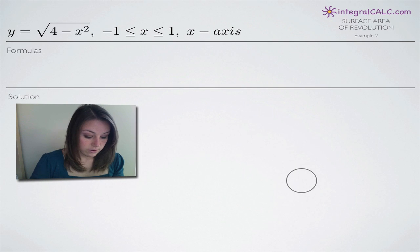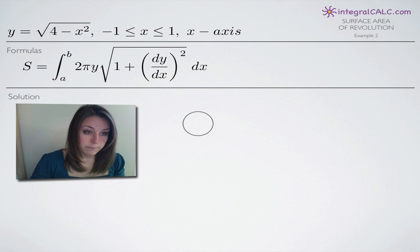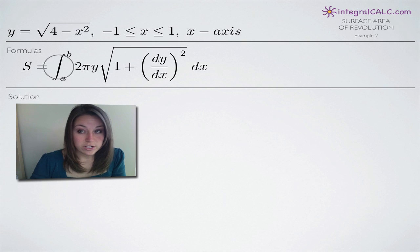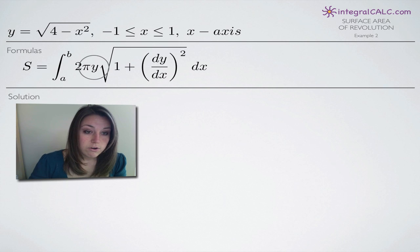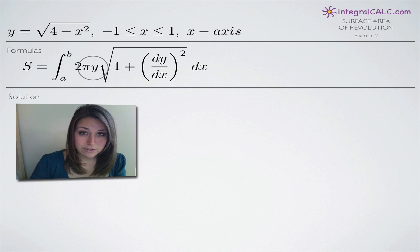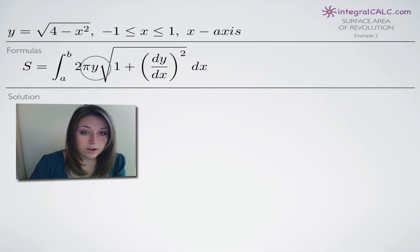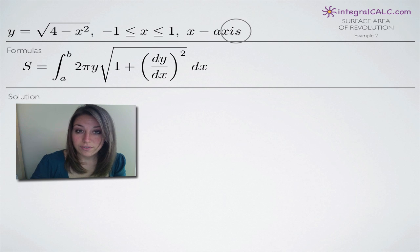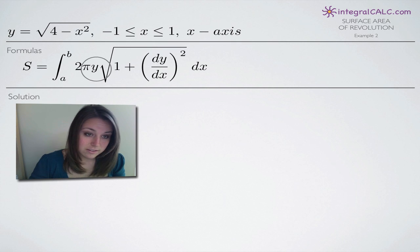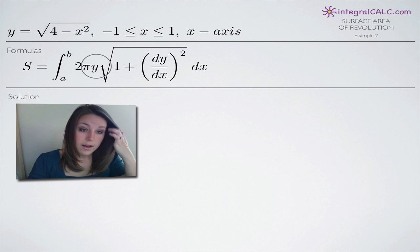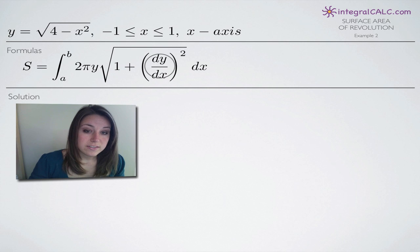A couple of things before we get started. We're going to be using this equation here to find the surface area of revolution. Notice that we have this y variable — this changes depending on which axis we're rotating around. When we rotate around the y-axis, this is an x. In this case, we're rotating around the x-axis, so it's a y. Everything else stays the same.